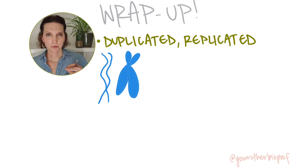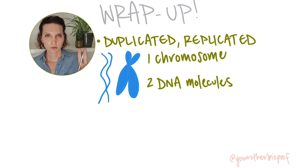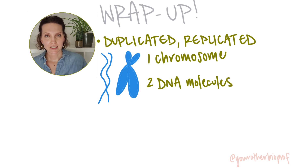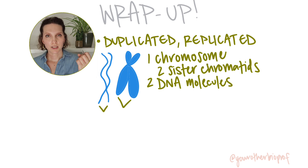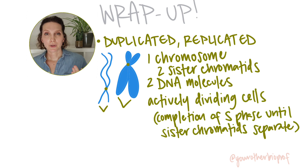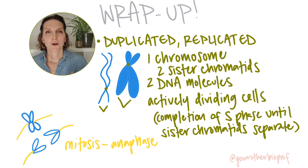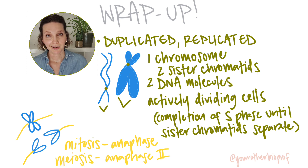Replicated or duplicated chromosomes — again, a single chromosome — but these consist of two molecules of DNA and proteins. We've got sister chromatids that are identical to each other and joined at the centromere. You're going to find duplicated DNA in cells that are actively dividing, from the point at which DNA is replicated during the S phase, all the way until sister chromatids are pulled apart in anaphase of mitosis or in anaphase two of meiosis. And then you're back to unduplicated chromosomes again.